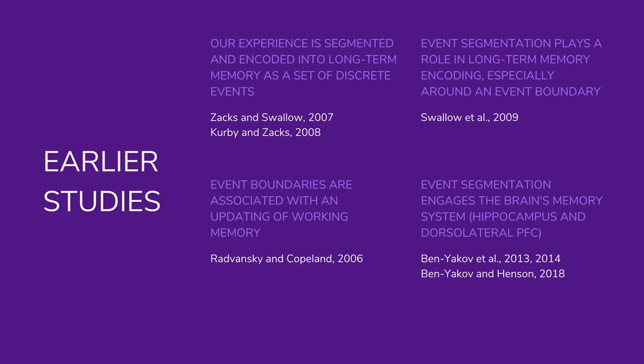Finally, event segmentation engages the brain's memory system — specifically the hippocampus and the dorsolateral prefrontal cortex. It's perhaps no surprise that the memory system is what's engaged here, given how closely conceptual closure relates to how we remember things.